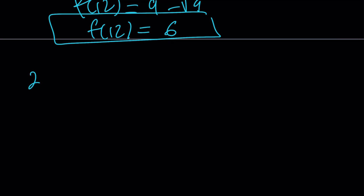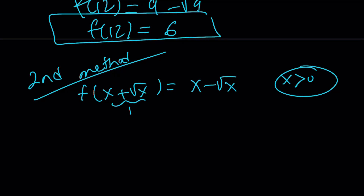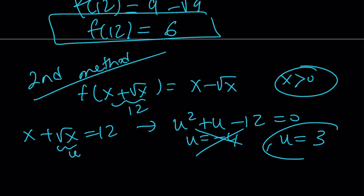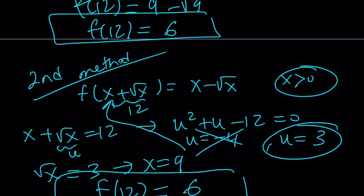Let's talk about the second method, which is definitely shorter and much better — no pain, no gain. We want to find f(12), so set x + √x = 12. Replacing √x with u gives u² + u − 12 = 0, which factors to give u = −4 and u = 3. Since √x must be positive, we reject −4 and take u = 3, so √x = 3, meaning x = 9. Replacing x with 9 gives f(12) = 9 − 3 = 6 — the same answer.